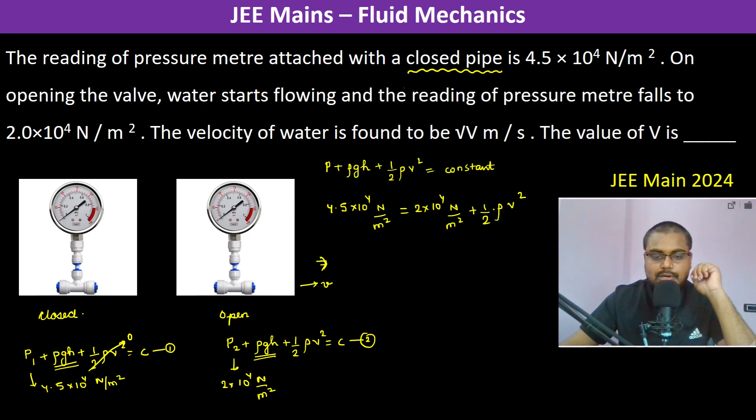Therefore, V square is equal to 2 into 2.5 into 10 to the power 4 kg m s minus 2 divided by meter square and divided by rho. What is the density of water? It is not given. So we assume it 1000 kg per meter cube. Meter cube goes up kg and kg is gone. Meter square goes meter 1000. So this 10 is remaining. Therefore, V square becomes 2 into 2.5, 5 into 10 is 50 meter square per second square.